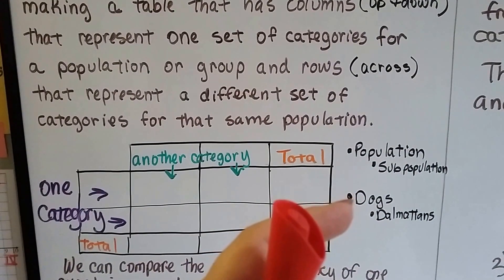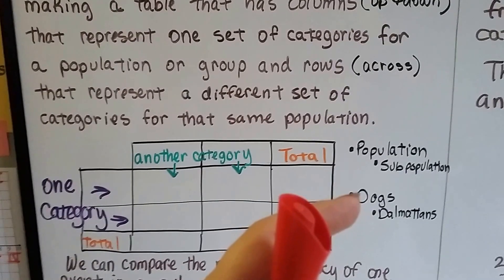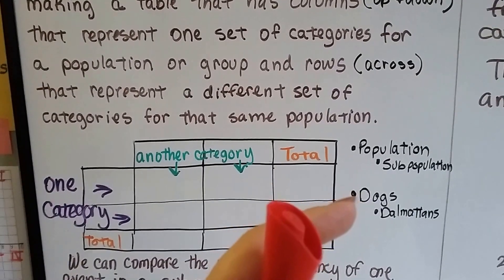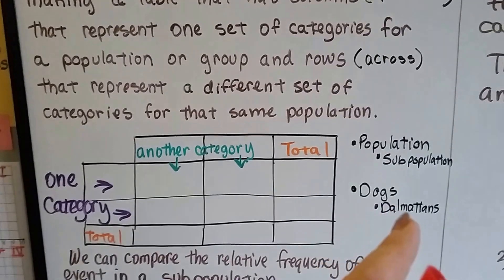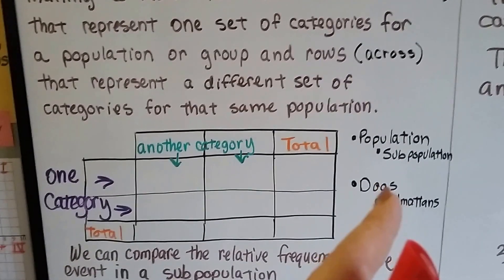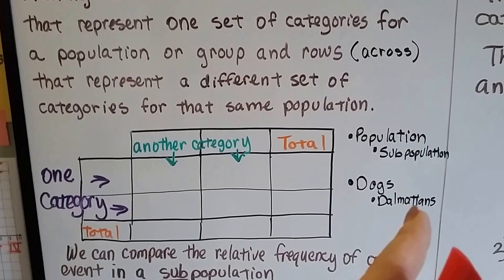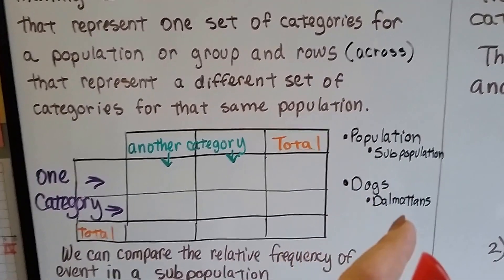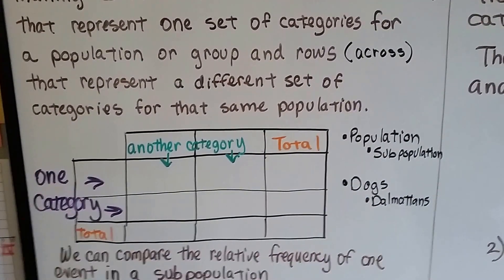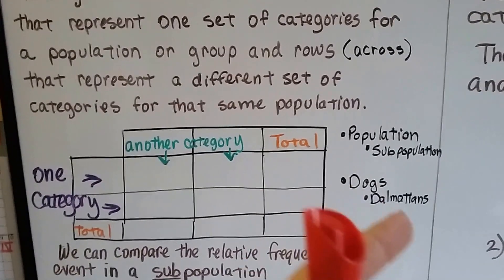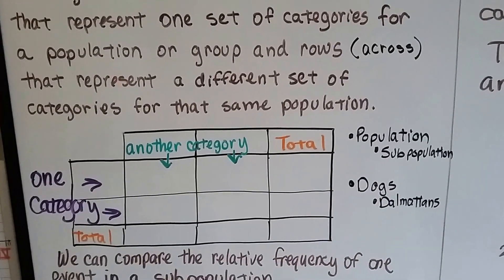A population could be like all the dogs in the country or the world, and a sub-population would be Dalmatians. That's a type of dog and that could be a whole population of a type of dogs. Another one could be Beagles or German Shepherds or Poodles or Weimaraners. Those would all be sub-populations of dogs.